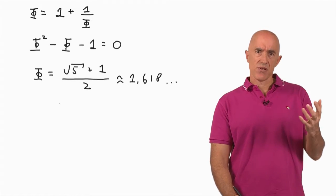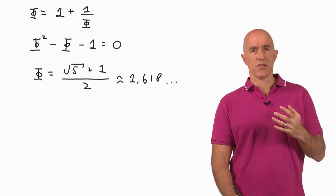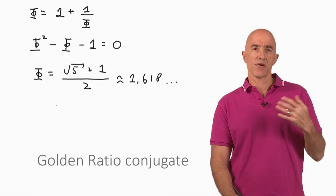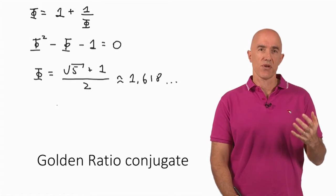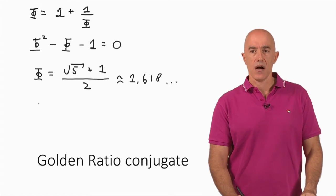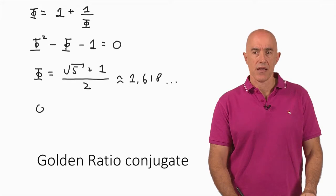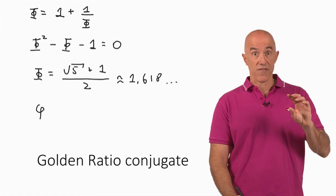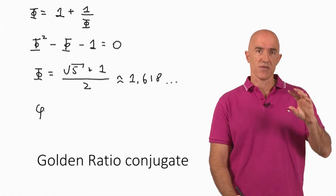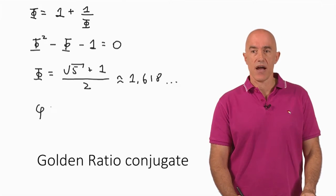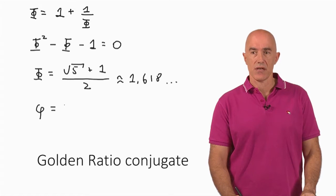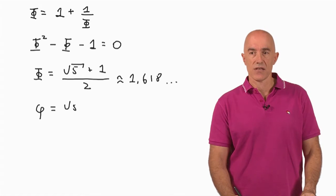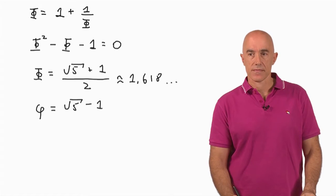In addition to the golden ratio, it's useful for us to define another number, which is called the golden ratio conjugate. Rather than using big Phi, we use a small letter Phi, also a Phi but a small case Phi, to define the golden ratio conjugate. This one we define as square root of 5 minus 1 divided by 2.